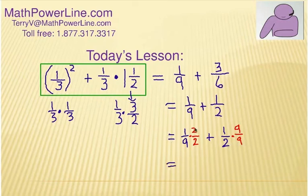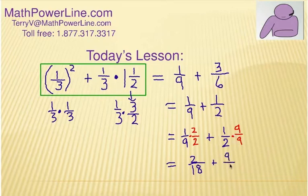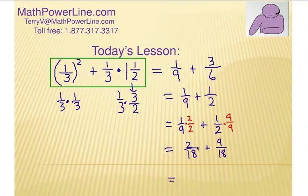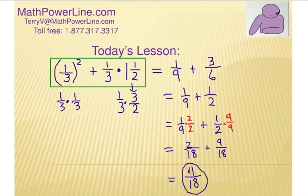What do we have now? This should be two over eighteen, and we're adding to that nine over eighteen. What we've done is called writing equivalent fractions. We're trying to add one-ninth and one-half — they have different denominators, so I rewrite them with the common denominator of eighteen. Obviously my last step is to add the numerators together to give me eleven. Don't forget, we don't add the denominators — it stays eighteen. Can we simplify or reduce that? Nope. We keep eleven over eighteen as our final answer. I hope you followed that whole process — it's a really good mixed example of a lot of things with fractions and exponents. Thanks for watching.